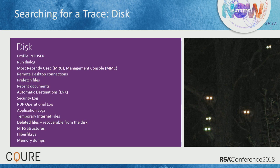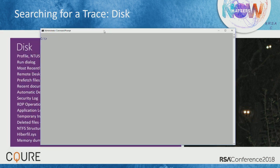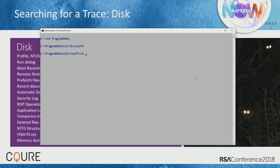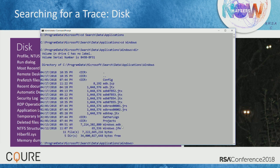Before you think about getting access to the indexing service, you need to know where it is. The indexing database is found on the disk within Program Data, Microsoft, Search, Data, Applications, Windows — and there you find Windows.edb, the indexing service database. That database cannot be copied directly because of a non-share handle to the file, which means you have to create a shadow copy in order to copy it. In Windows 10 client you don't have VSS admin like on a server, so you have to find other ways — or take VSS admin from a server to create the shadow copy.